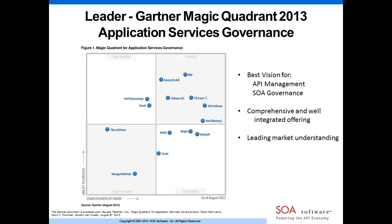In 2013, Gartner gave us very nice recognition for the hard work we do in the API and SOA space. Gartner gave us Best Vision for API Management and Best Vision for SOA Governance in a paper called 'Application Services Governance' — Gartner's terminology for the convergence of API and SOA technology into the future. We're very happy with that outcome, which represents a lot of years of hard work and thinking about what makes sense for customers tackling these challenges.